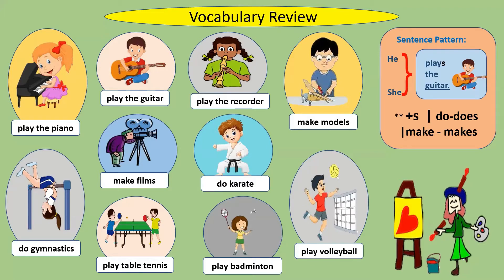We have 10 of them. Number one is 'play the piano.' She plays the piano. He plays the piano. If you use this in a sentence, you add S to your verb because our noun here is only one. And with 'do', you change it to 'does.' Number two, 'play the guitar.' He plays the guitar very well.